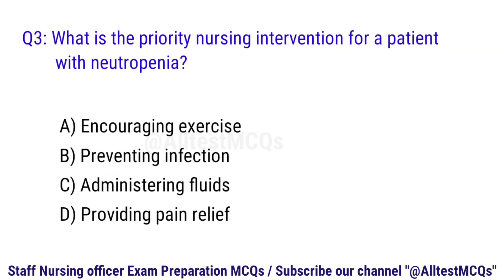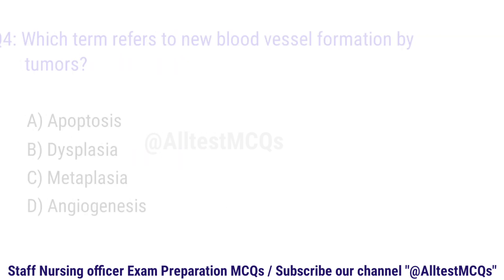Q3. What is the priority nursing intervention for a patient with neutropenia? The right option is B. Preventing infection.